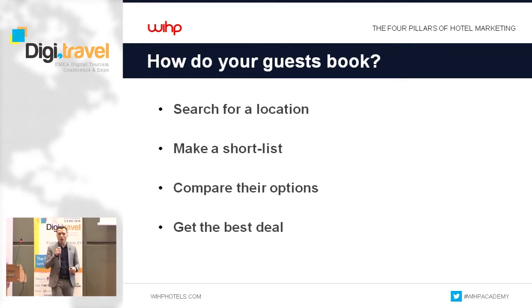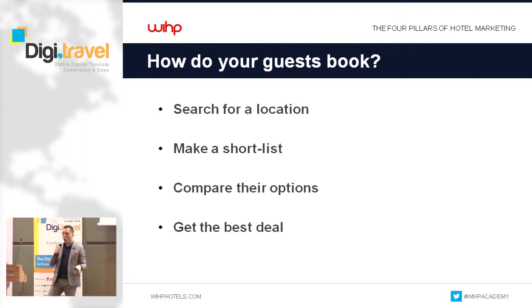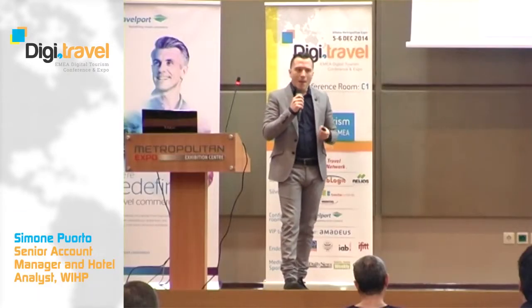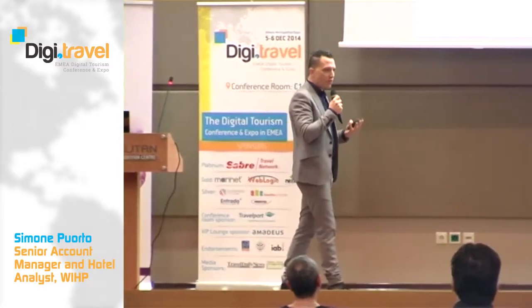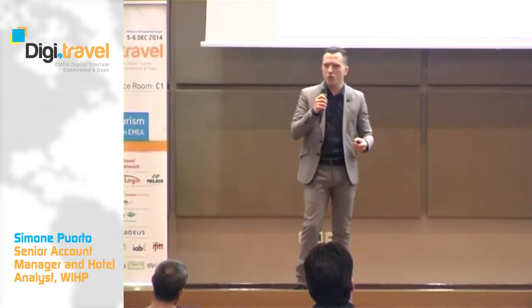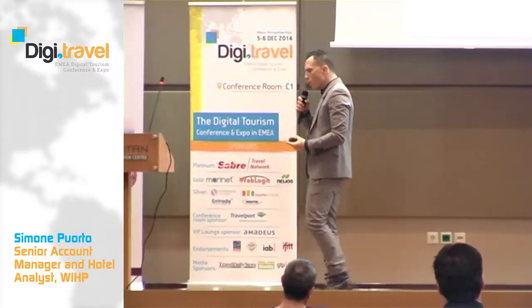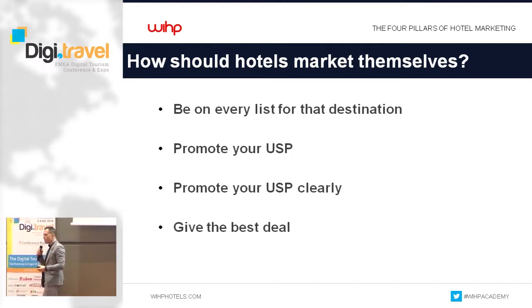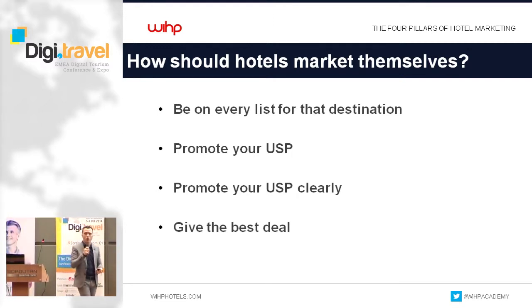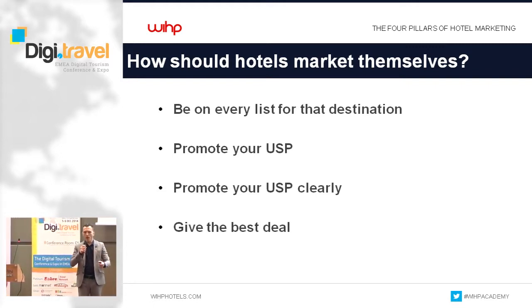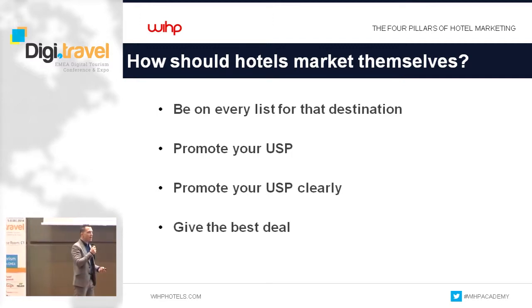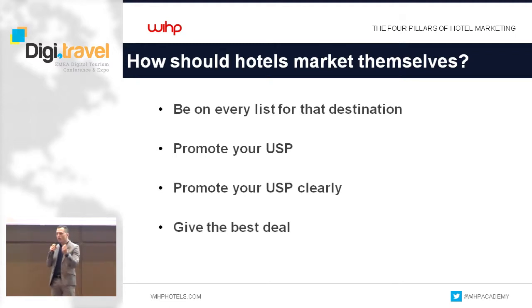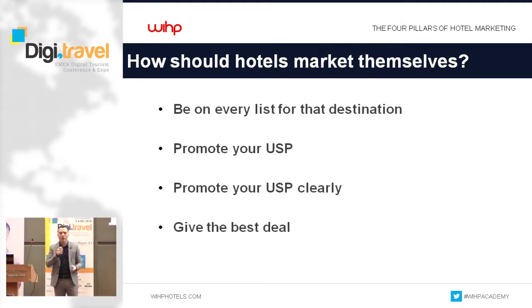Guests make a short list of hotels based on filters they find on TripAdvisor or Booking.com. They compare their options and look for the best deal. With this new type of search — called vertical search — it's not that important to be first on generic keywords like 'hotel in Athens.' What is very important is that you are listed with a very good ranking in all possible lists for your destination: review sites, OTAs, local directories. You need to promote your USP — unique selling proposition — the thing that makes you different from all other hotels.